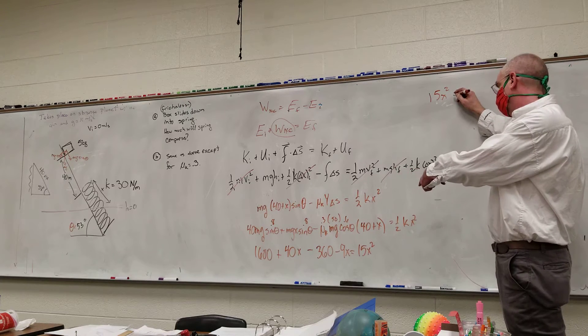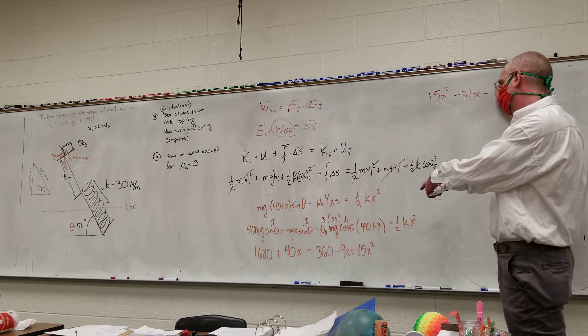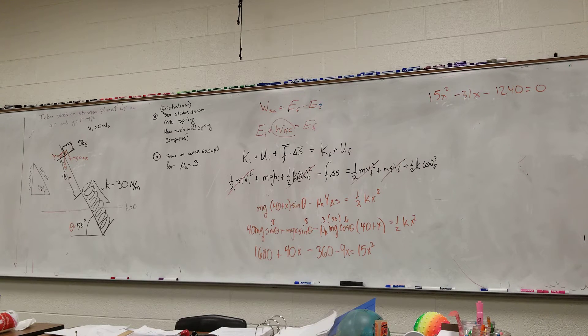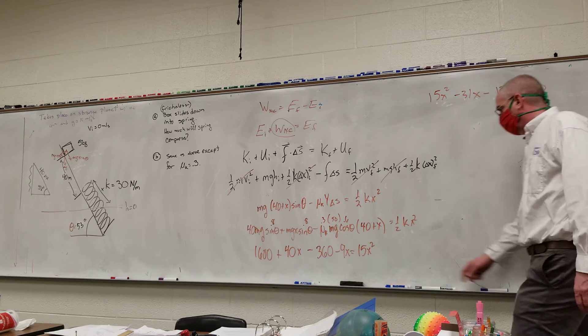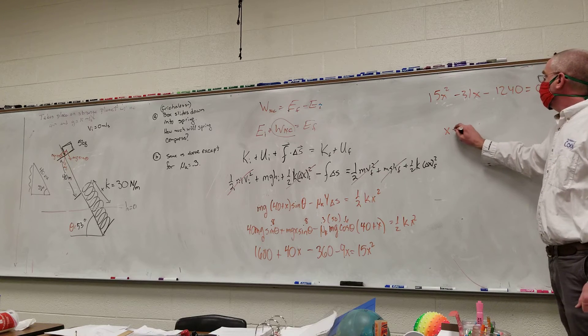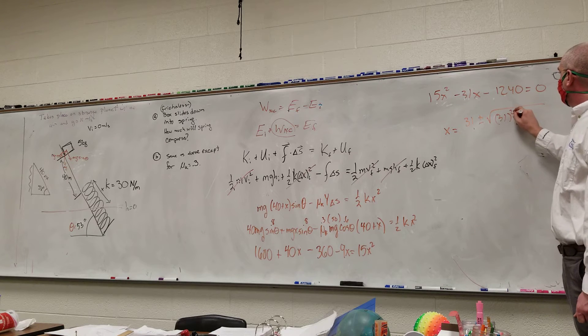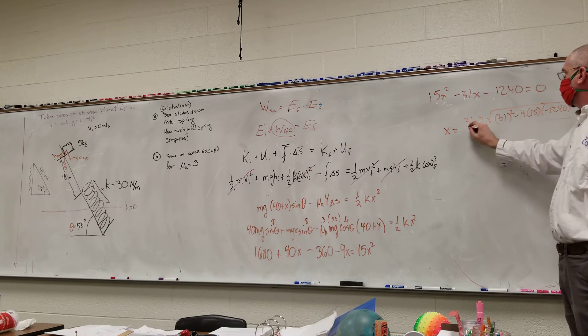Let's see, so minus 31x, minus 1240. So x equals 31 plus or minus the square root of 31 squared, minus 4 times 15 times negative 1240.